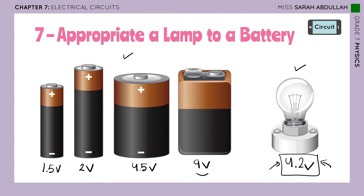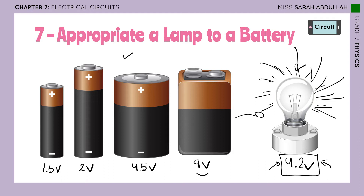In today's lecture, we're going to choose three different batteries and connect them to the lamp, and we're going to see which is the appropriate battery depending on how the lamp is glowing — whether it's giving a faint light, a normal light, or glowing strongly. It depends on the outcomes of the experiment.